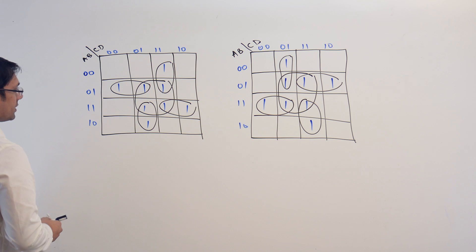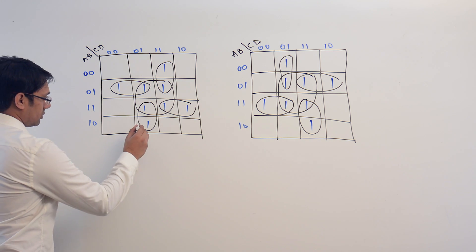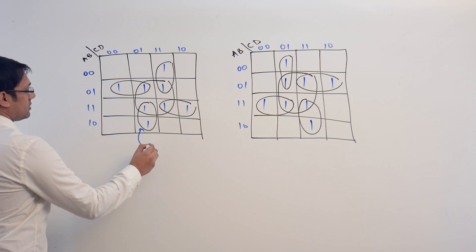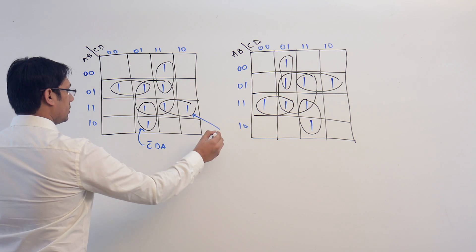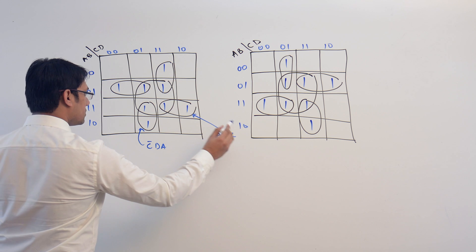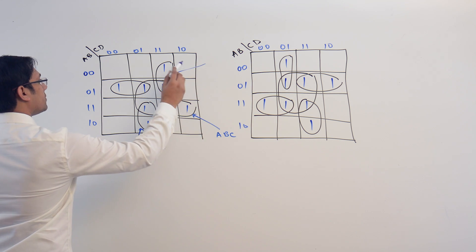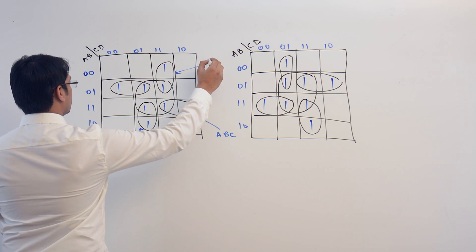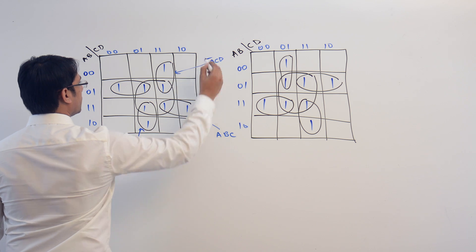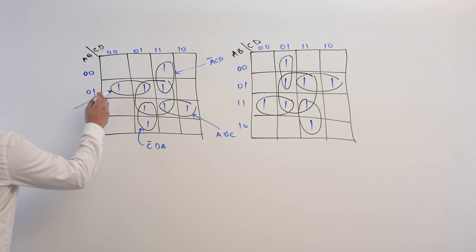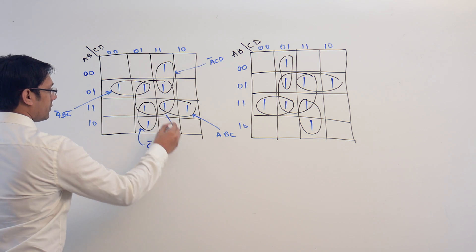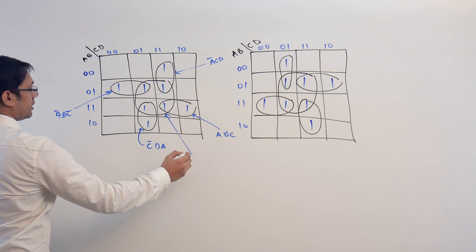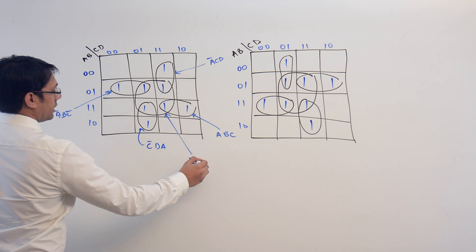What are these subcubes representing? This subcube is representing C complement, D, and A. This subcube is representing A, B, C. This subcube is representing A complement, B, C complement, and the biggest one is representing B and D.